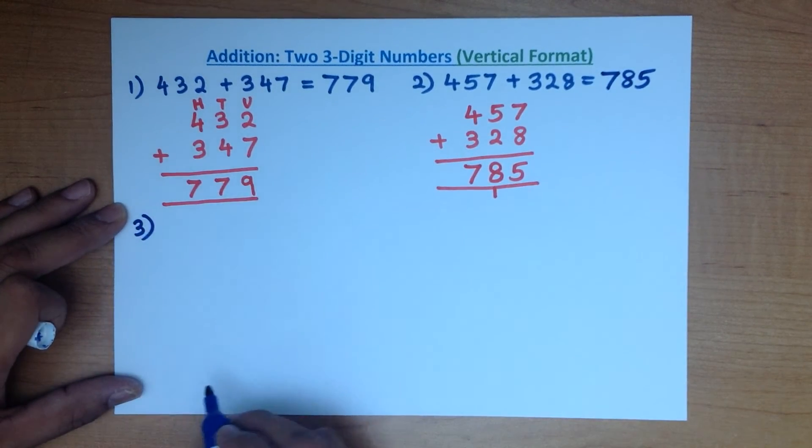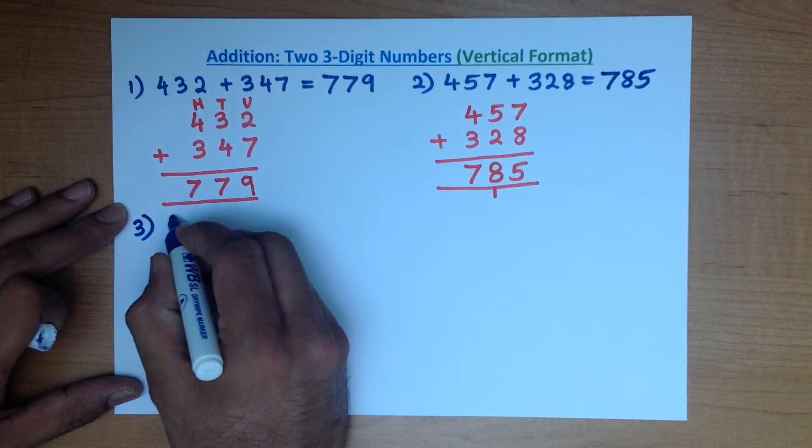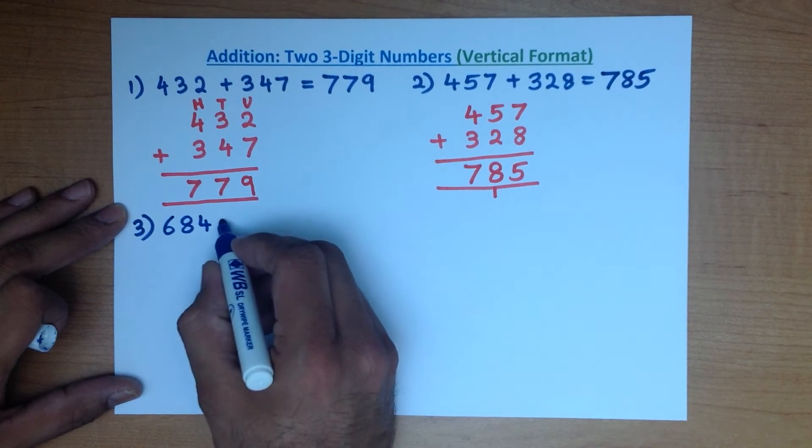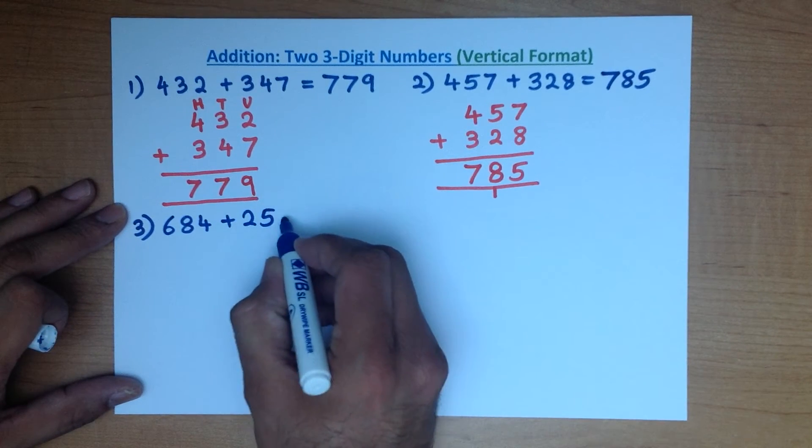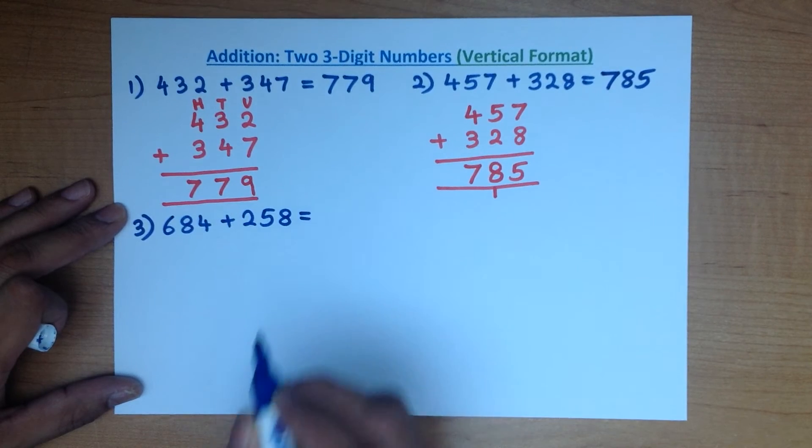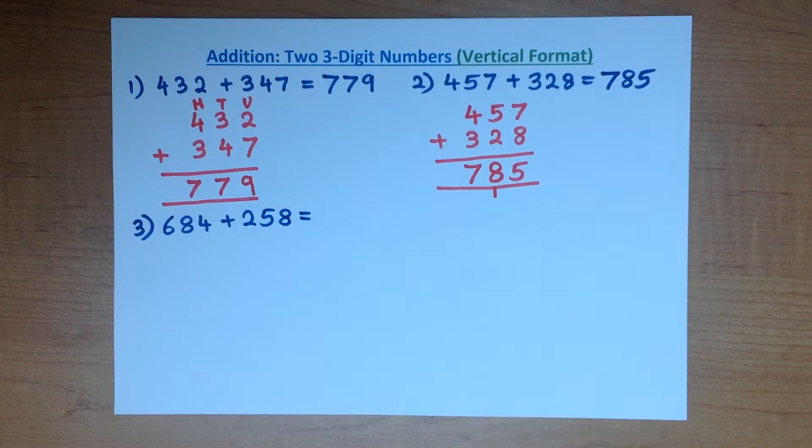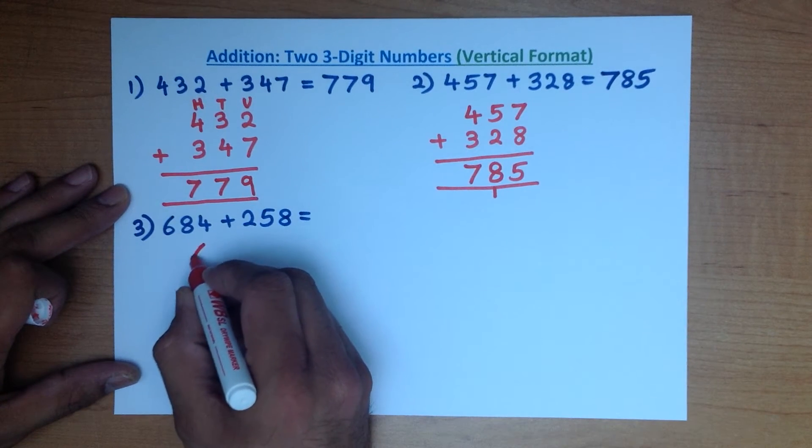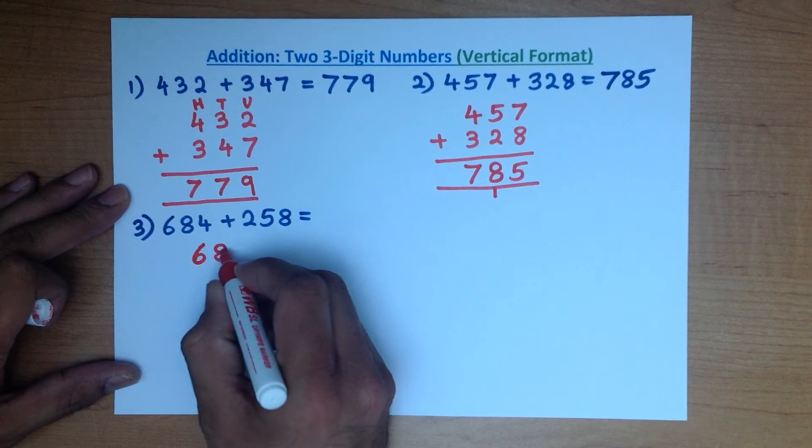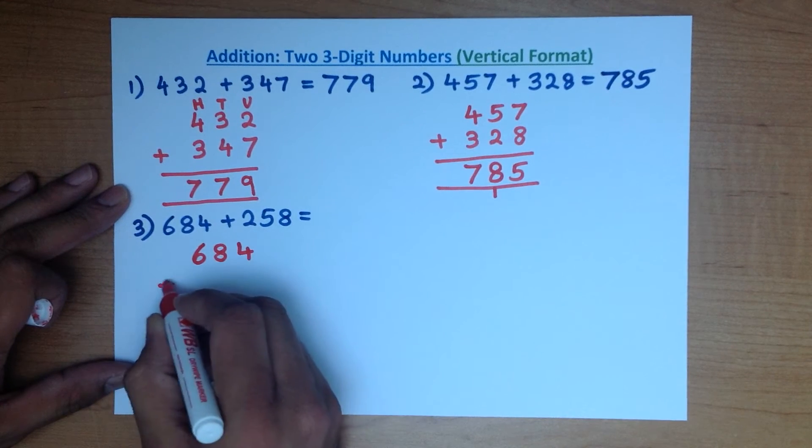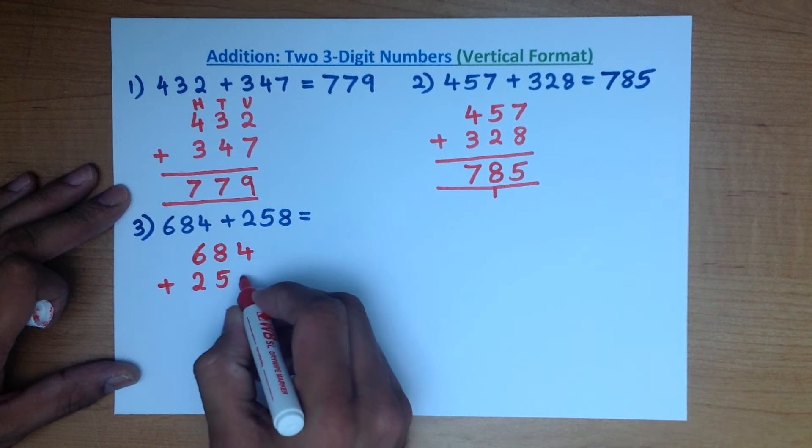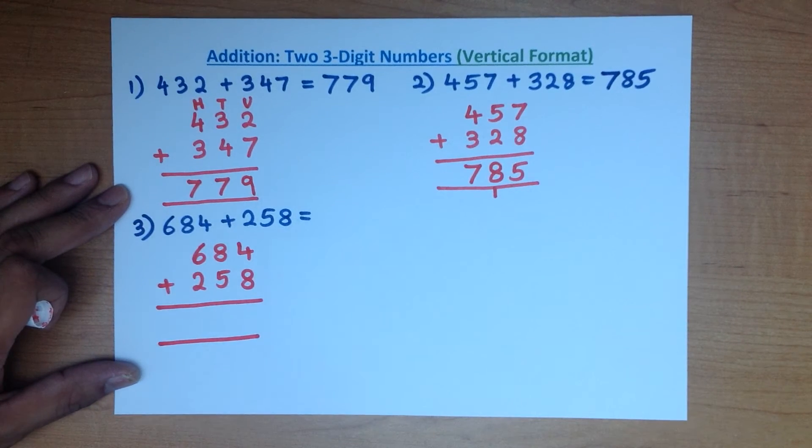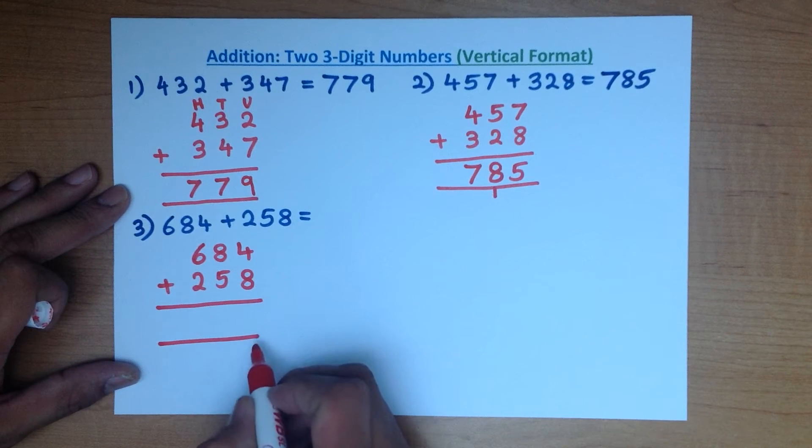Third example. What is 684 plus 258? Let's write them down in the vertical format. 684 plus 258. Again, we start with the column on the right hand side.